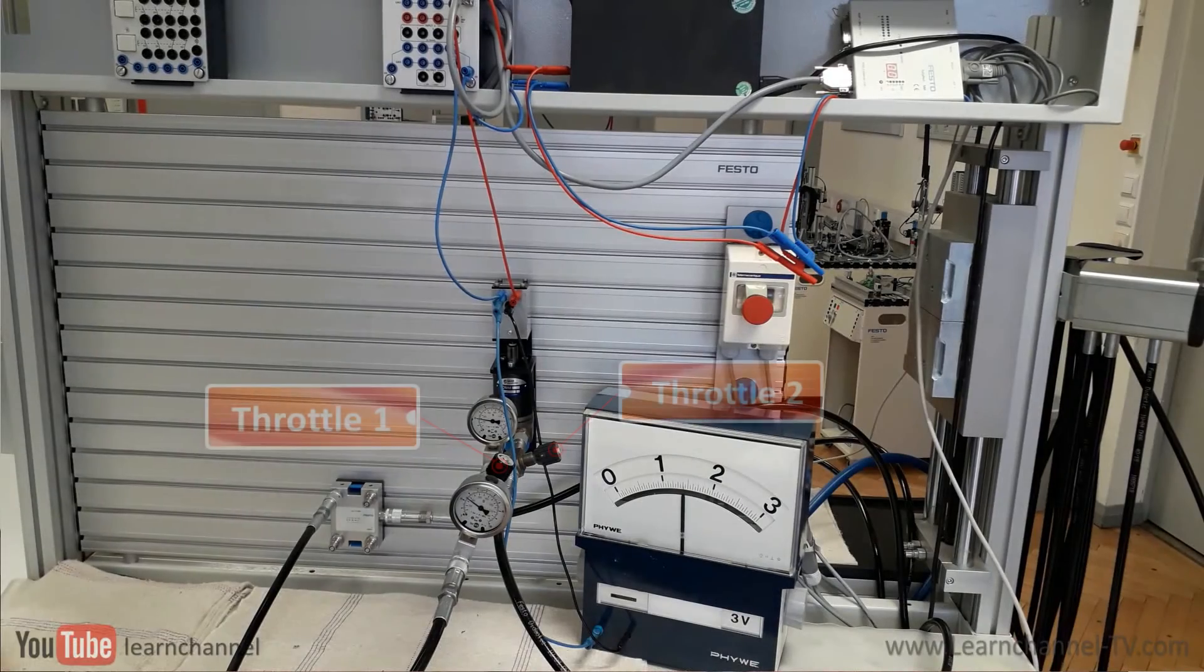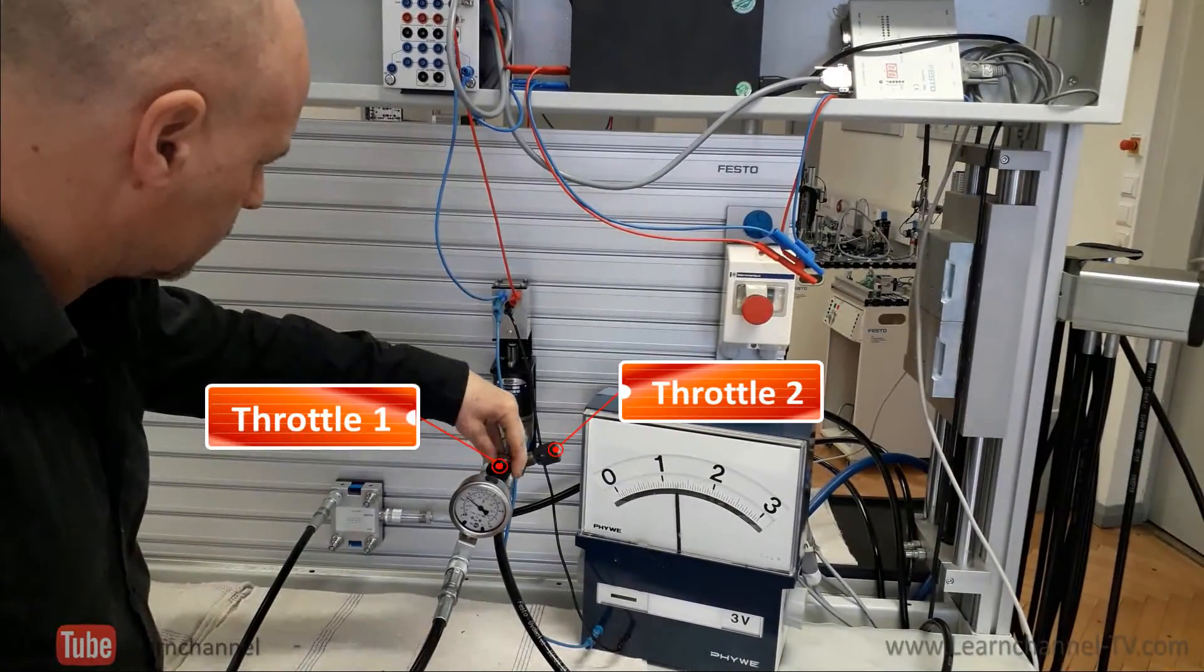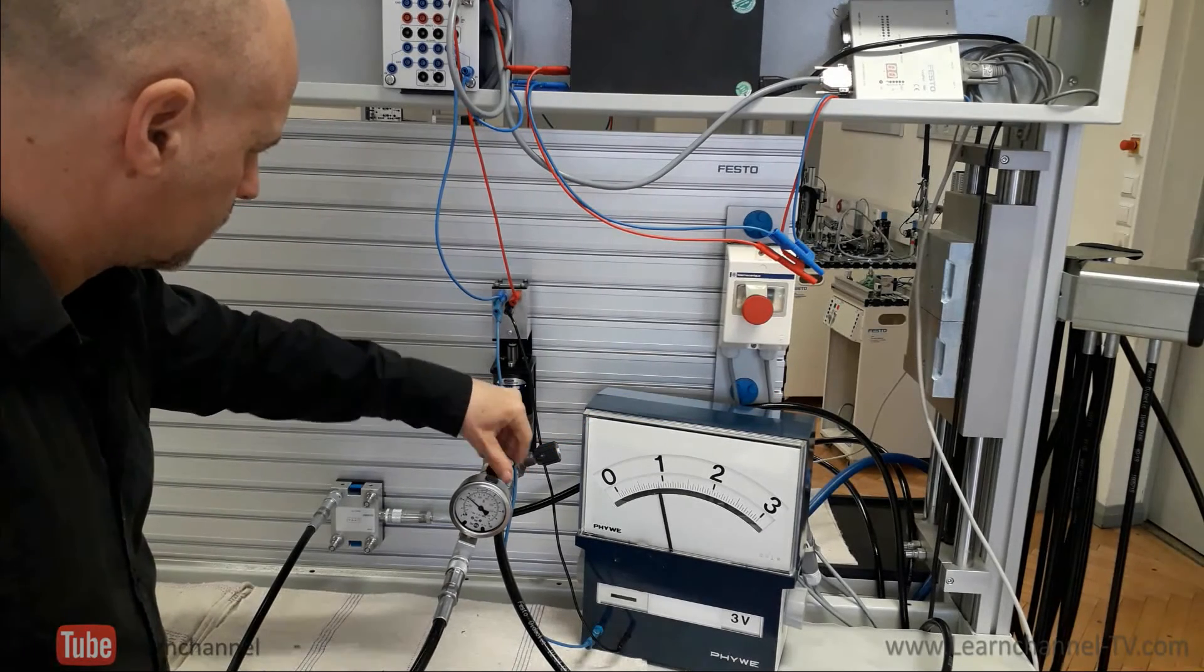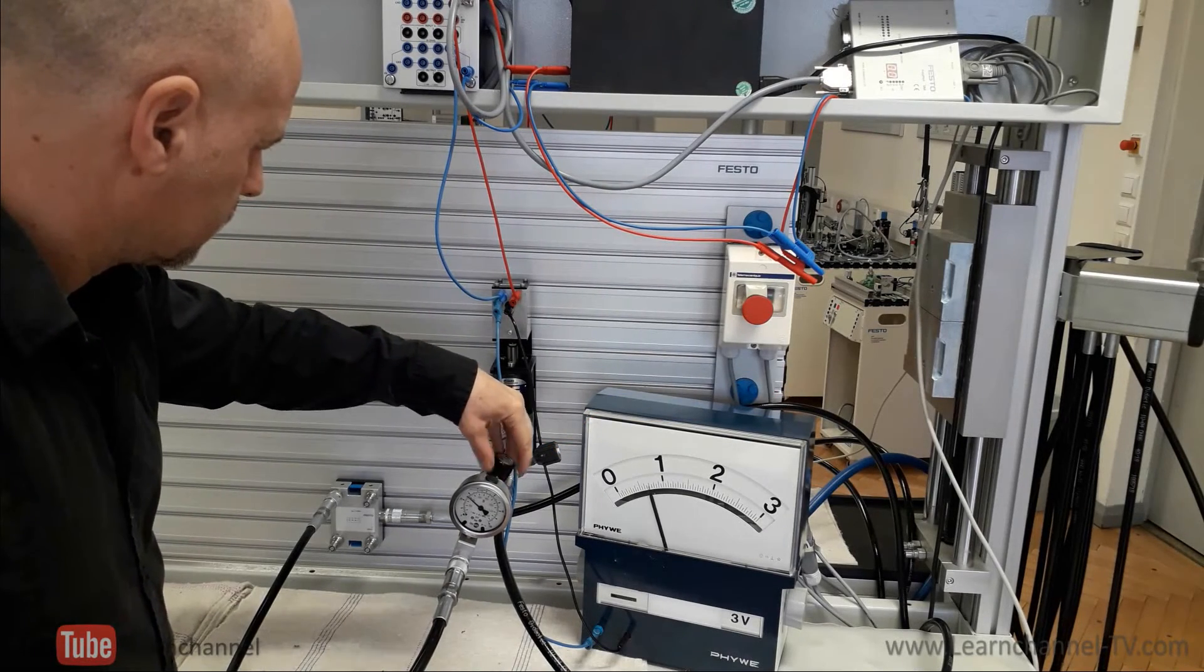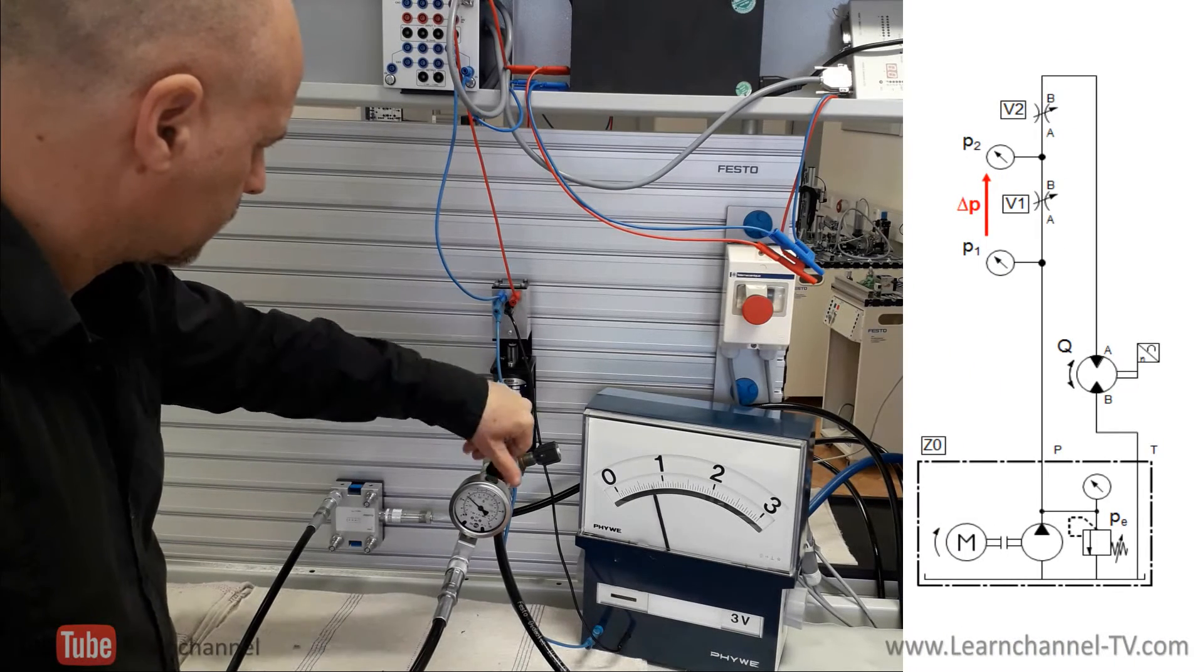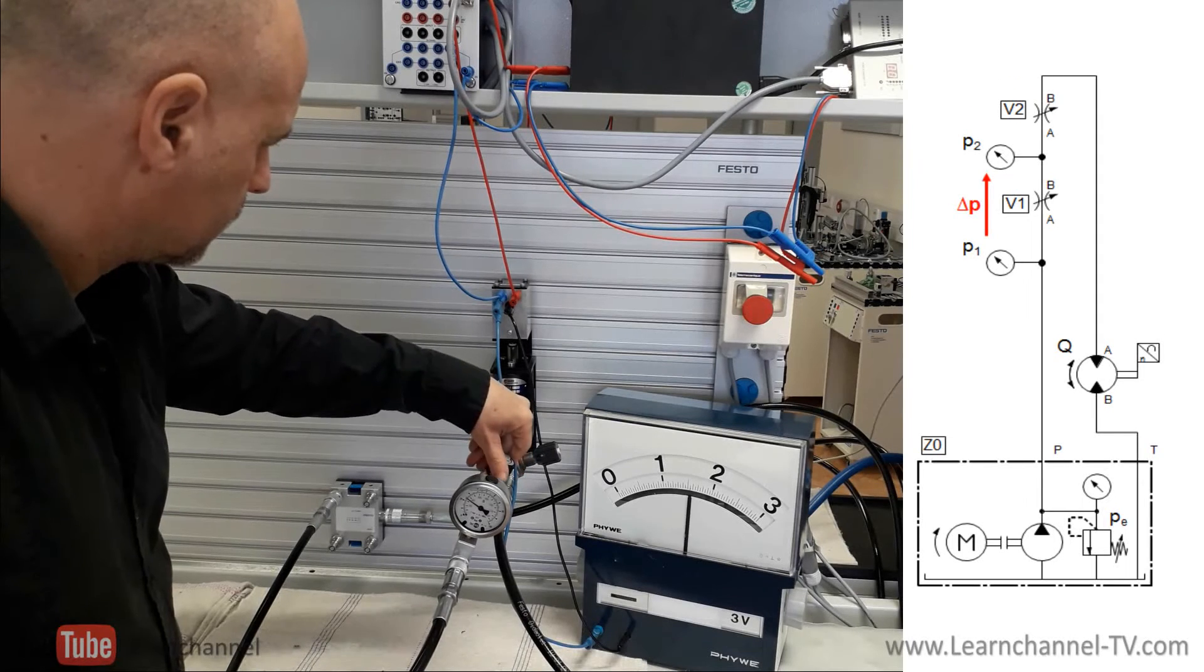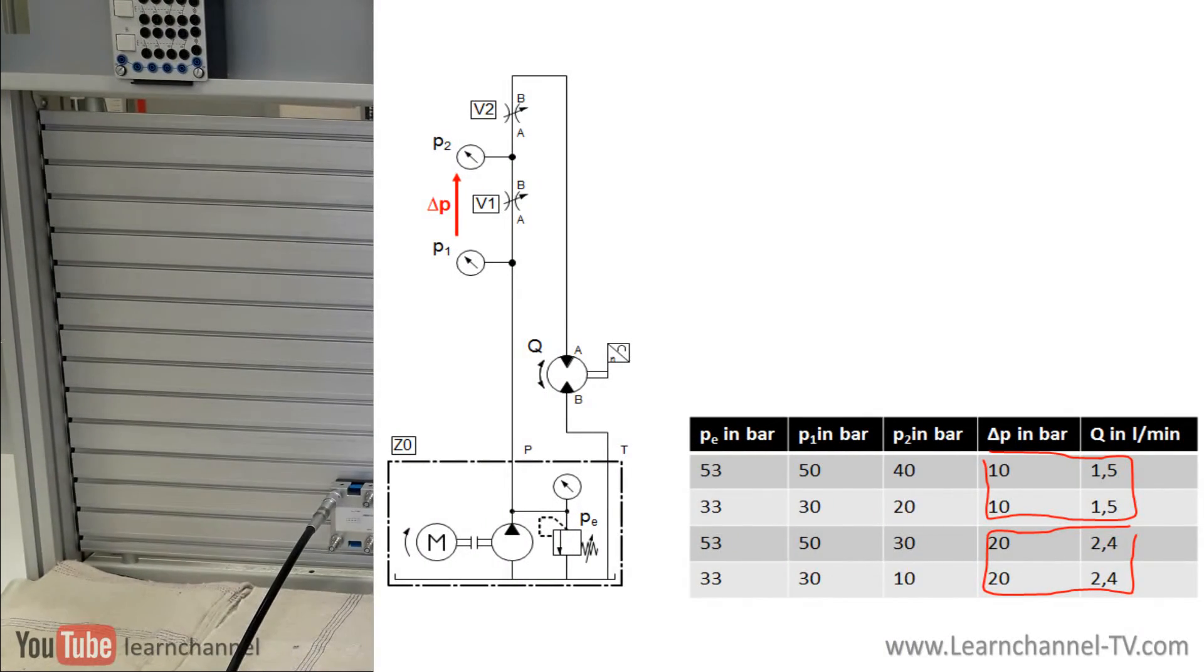In this experiment, we want to find a relationship between the pressure drop across the throttle and the volume flow. The pressure difference is measured along throttle one and the second throttle is used to simulate a load. In this experiment, we change the load and system pressure. As you can see, a certain pressure difference equals a certain volume flow.